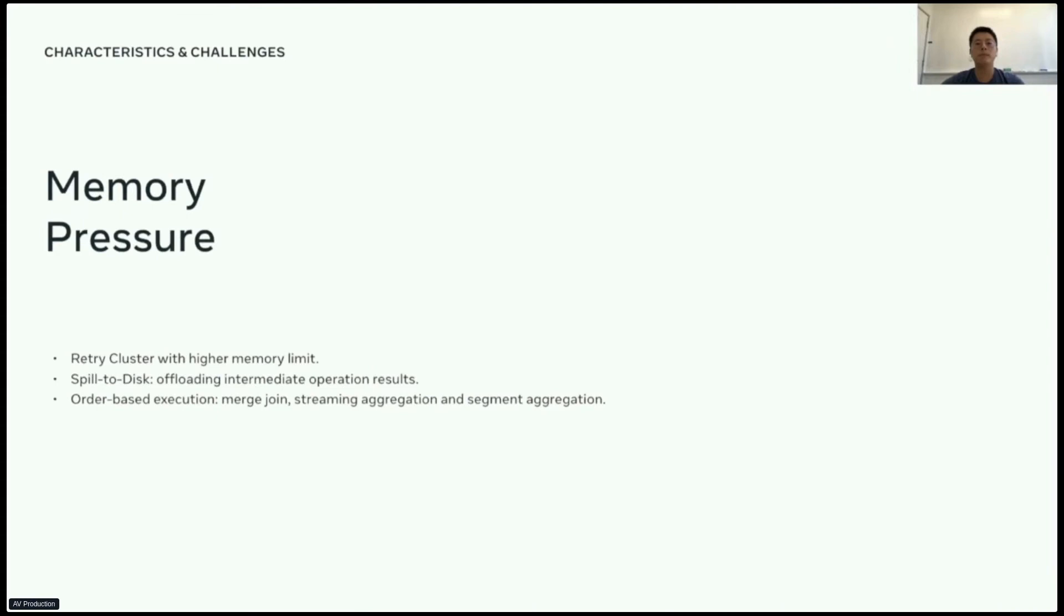Also, as you can tell from the fact that we are categorizing the workload into normal and well, some queries can be very heavy and often end up with out-of-memory failures. To address this issue, currently we are using a dedicated cluster which has higher memory limits set up to retry the queries that failed because of out-of-memory. And we are also looking to the spill to disk feature for this use case. By enabling spilling, the engine will offload intermediate operation results to disk to lower the memory usage. Also, given that we have limited query patterns for this use case, we have implemented order-based execution which can drastically reduce the memory footprint for operations like aggregation and join.